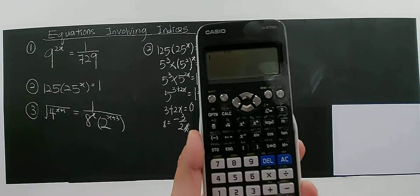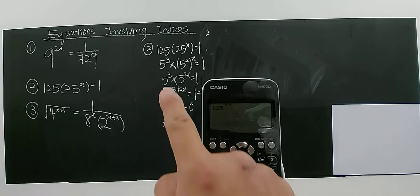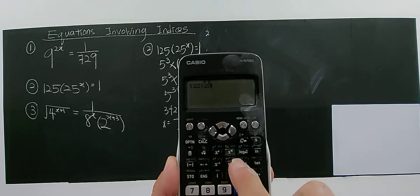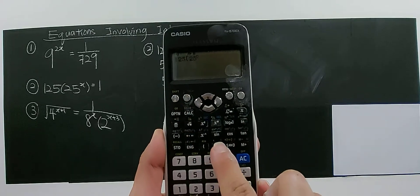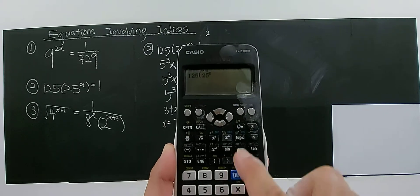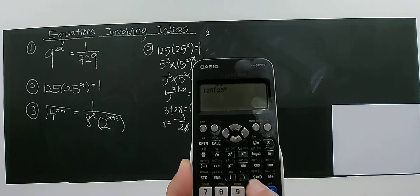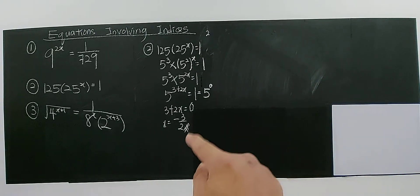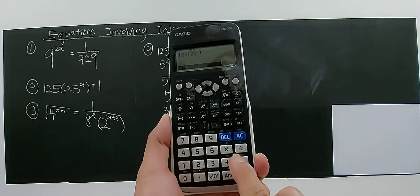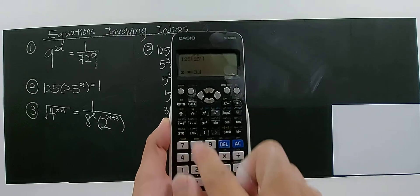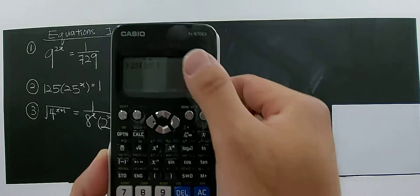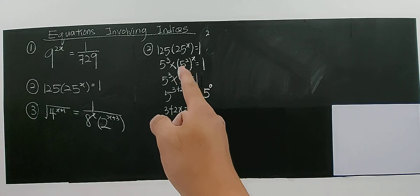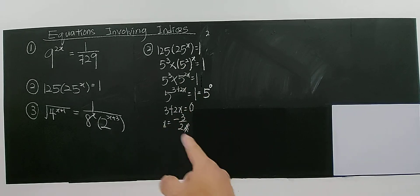You can also check your answer using a calculator. Key in 125 times 25 to the power of x, then calculate by entering negative 3 over 2 as the value. You should get 1 as your answer, which confirms that x equals negative 3 over 2 is the value that satisfies this equation.